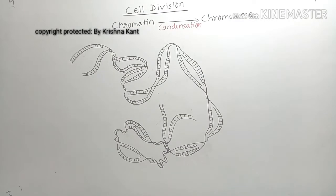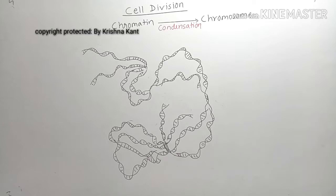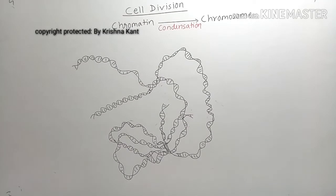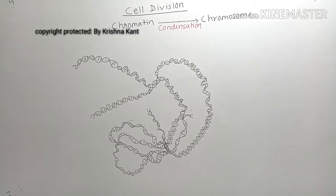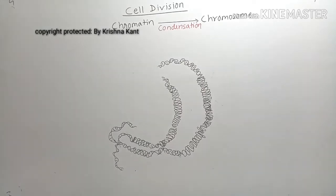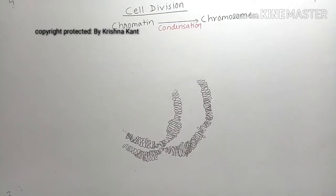After the completion of DNA replication, two daughter DNA molecules are formed. They begin to undergo condensation and supercoiling, becoming short and thickened.